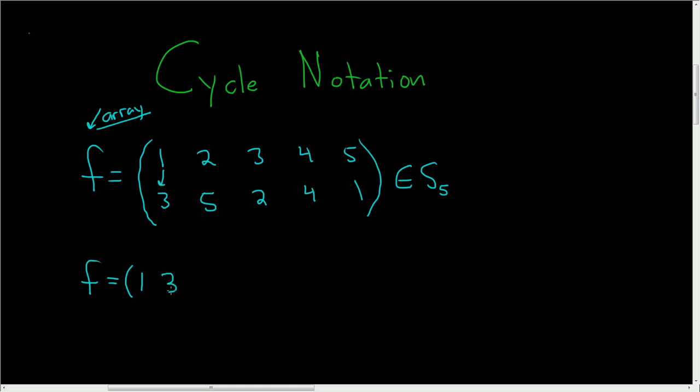You say, okay, where does 3 go? Well, here's 3. 3 goes to 2. So now you write the 2 down. Say, okay, where does 2 go? Well, 2 goes to 5. So then you write the 5 down.